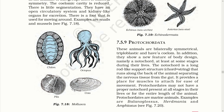Protochordata. These animals are bilaterally symmetrical, triploblastic and have a coelom. In addition, they show a new feature of body design — namely a notochord, at least at some stages during their lives. The notochord is a long rod-like structure for support that runs along the back of the animal, separating the nervous tissue from the gut. It provides a place for muscles to attach for movement. Protochordates may not have a proper notochord at all life stages. They are marine animals. Examples are Balanoglossus, Herdmania and Amphioxus.